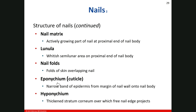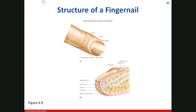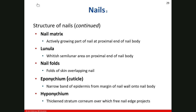The next part is the eponychium, known as the cuticle. This is essentially where the epidermis from your skin or your finger lays on top of the nail body. So you can see right here where the skin is just kind of laying on top there from the skin onto the nail body — that's going to be your cuticle.